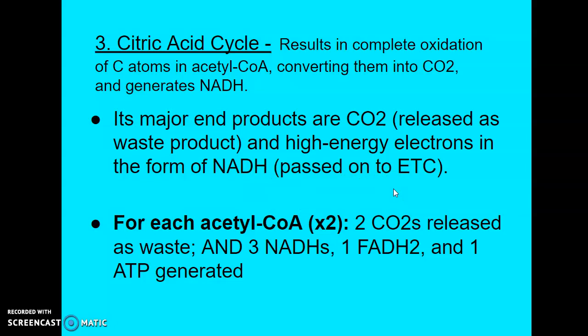The citric acid cycle does not necessarily use oxygen directly, but it does require oxygen in order to proceed on to the oxidative phosphorylation phase in the inner mitochondrial membrane. This is because there's no other efficient way for NADH to get rid of its electrons and to regenerate NAD+, which is what we need for the pathway to continue moving forward.